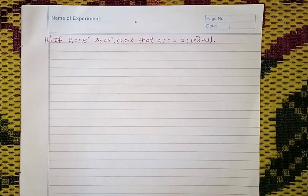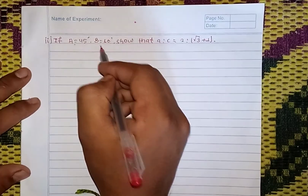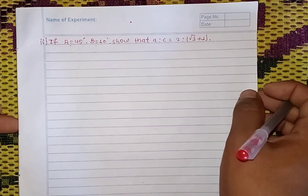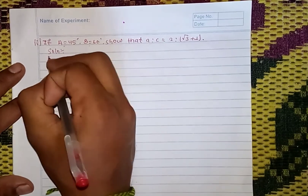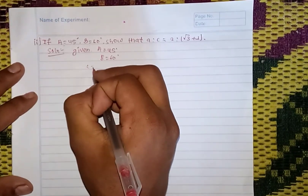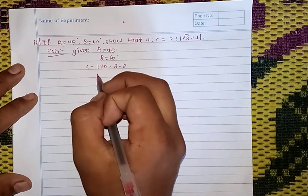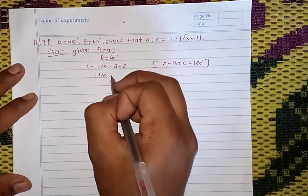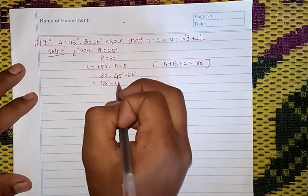Second question: angle A is 45 degrees, angle B is 60 degrees. Find the ratio a is to c, and prove that a to c equals 2 is to root 3 plus 1. Given: C equals 180 minus A minus B. So 180 minus 45 minus 60 equals 75 degrees.